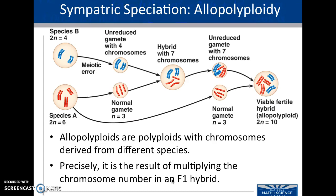Allopolyploidy refers to polyploids with chromosomes derived from different species. Essentially what can happen is we see the union of two gametes — a sperm and an egg — from two different species that are very similar but have a different number of chromosomes, and so we end up with a viable fertile hybrid with an allopolyploid amount of chromosomes. This is very uncommon, but it usually involves two very closely related species mating, skipping over all the pre- and post-zygotic barriers to get a viable fertile hybrid, which in itself is very rare.